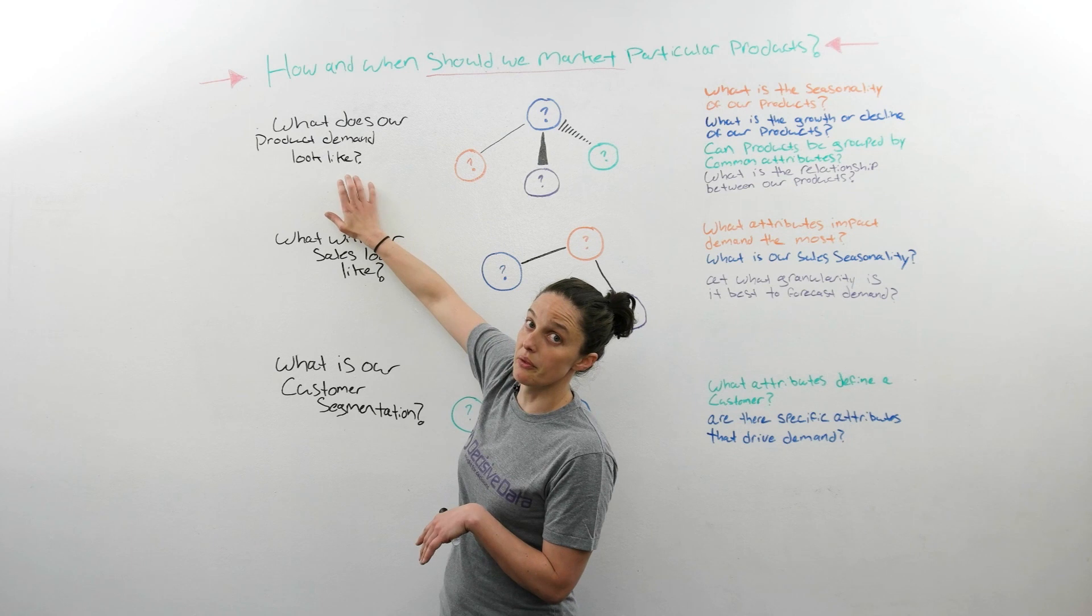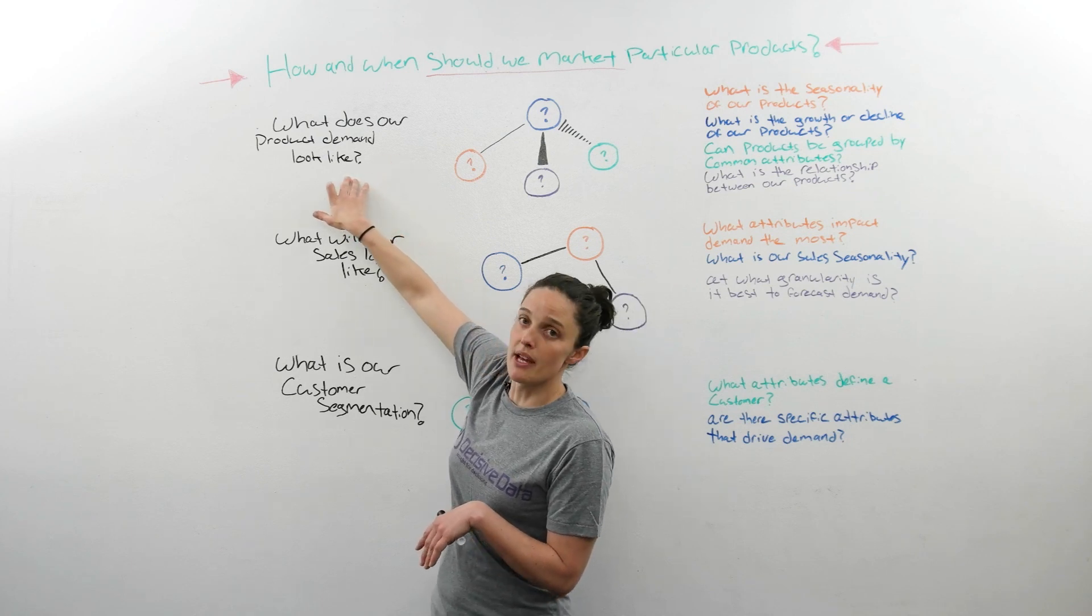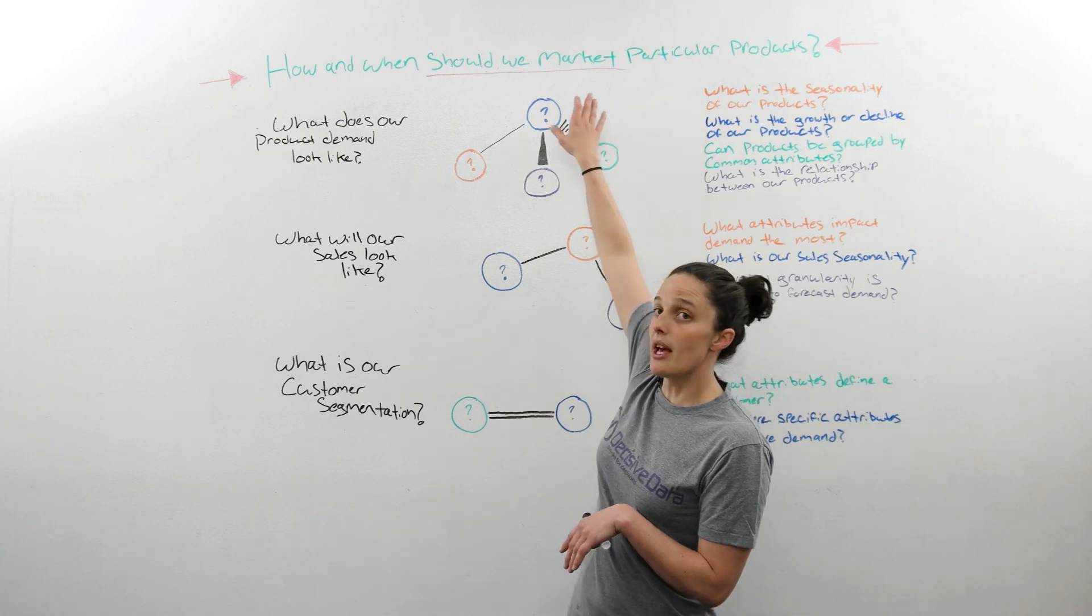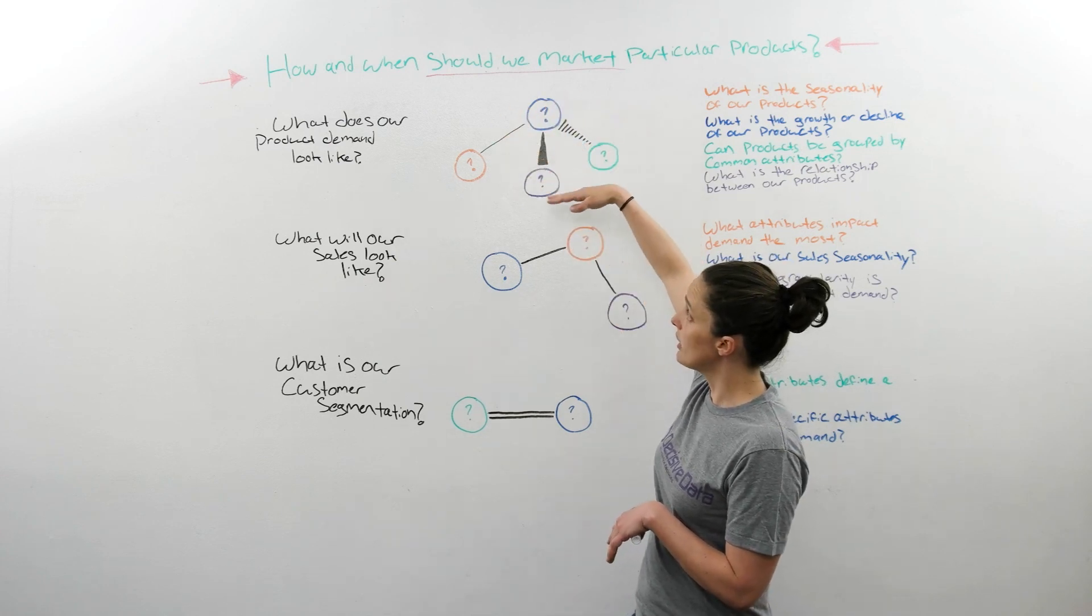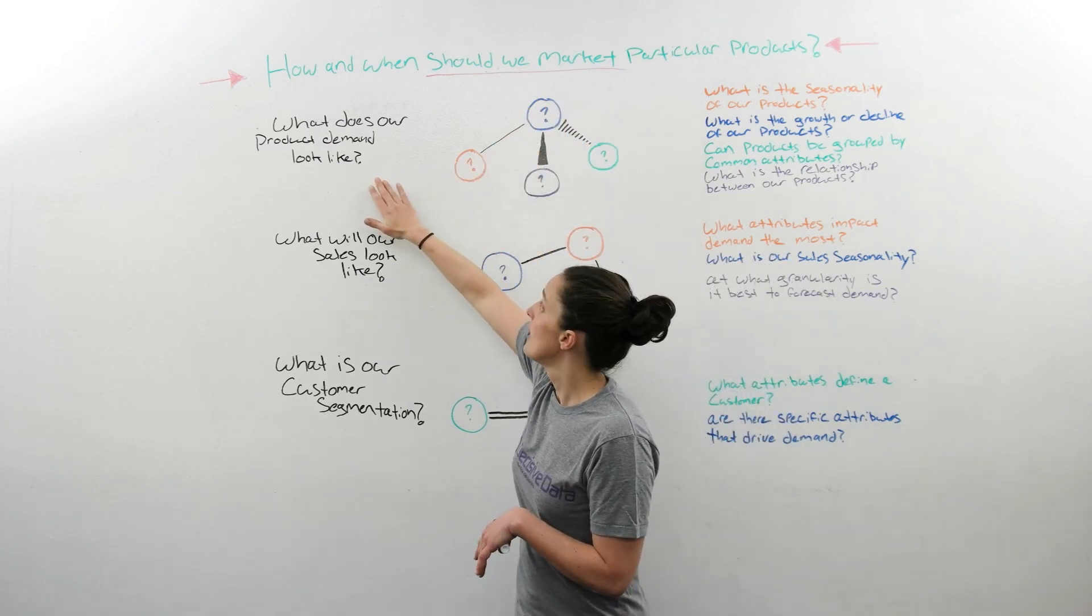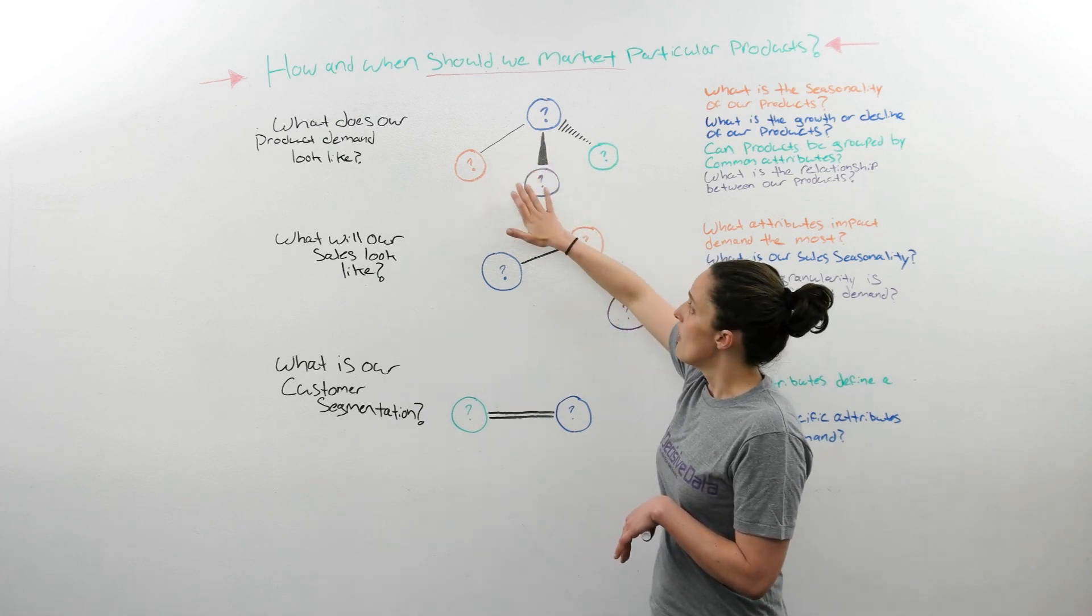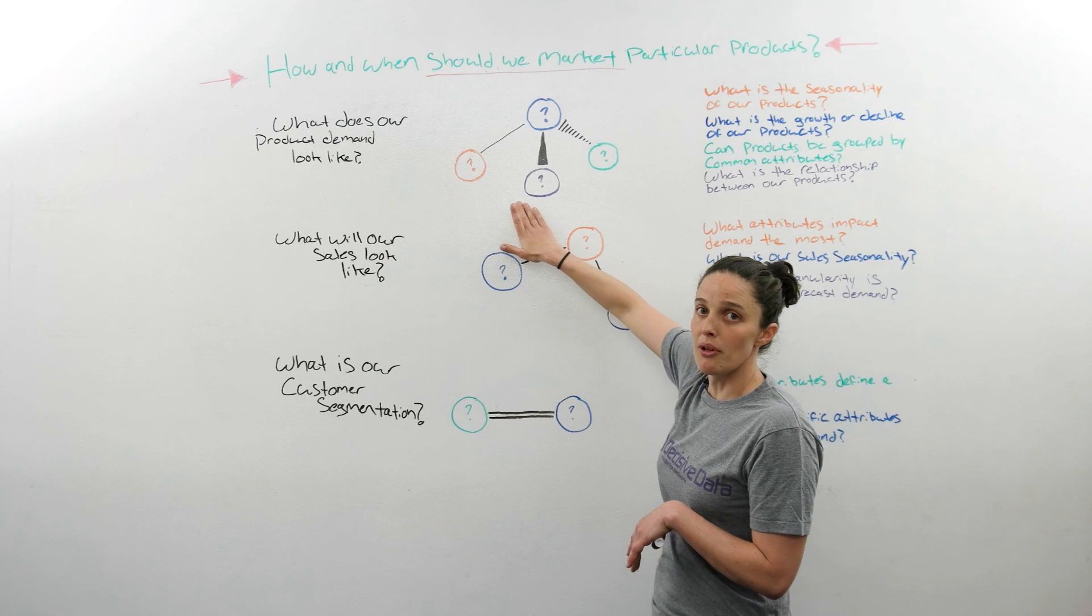So let's look at this first one right here. What does our product demand look like? We're going to think about it in terms of a product demand molecule. So this molecule answers this question. And it's built by elements. These are constructed of your elemental questions.